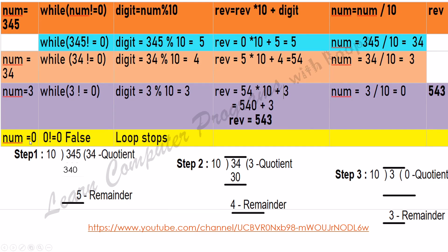So here num has become 0, so 0 is not equal to 0—that means 0 is equal to 0, so this particular condition is false. So the loop stops, and then we are going to print this value 543.